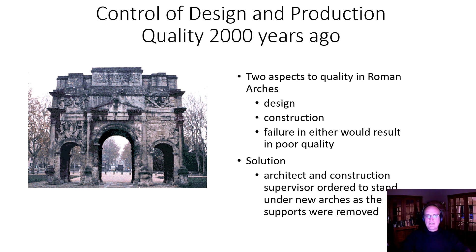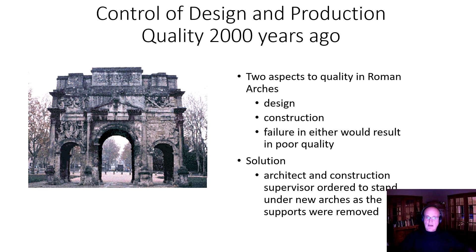Let's use an example — these are Roman arches, many of which stand today. There are two aspects of quality to those Roman arches. The first is design: is it designed in a way that it can succeed? You can fail before you even get to a product if you design something that customers don't want. The second is execution, which is construction. If you had a great design and didn't build it well, it could also fail. Failure in either of those elements would result in poor quality. In Roman times, the architect and the construction supervisor were ordered to stand under the new arches as the supports were removed — quite an extreme case of ensuring quality.